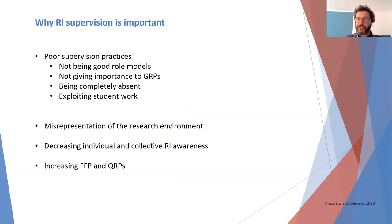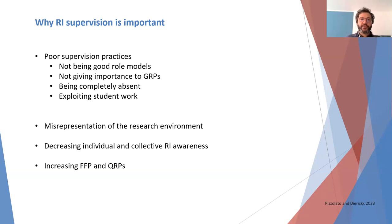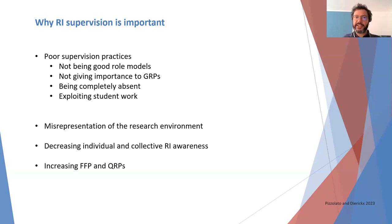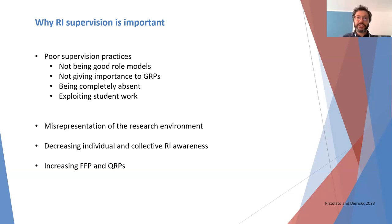In relation to research integrity, there are different typologies of poor supervision practices: not being a good role model, not giving importance to good research practices, being completely absent, or exploiting student work. Poor supervision can give supervisees a misrepresentation of the research environment, decrease individual and collective research integrity awareness, and ultimately lead to increasing malpractice.